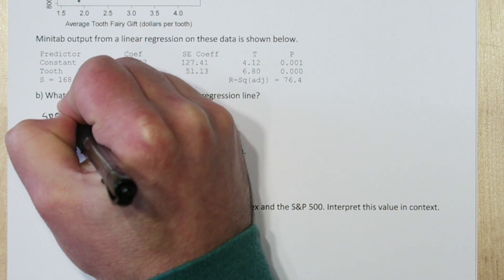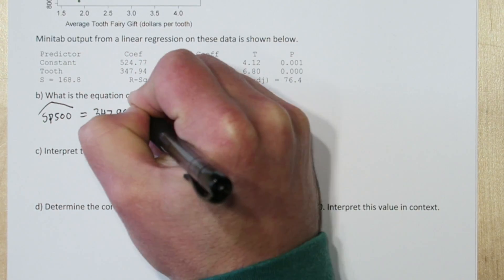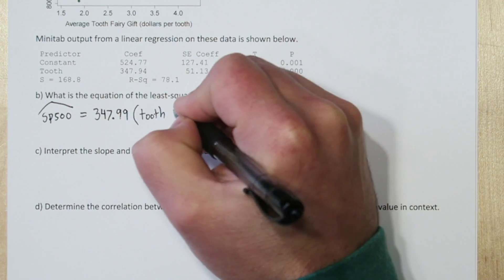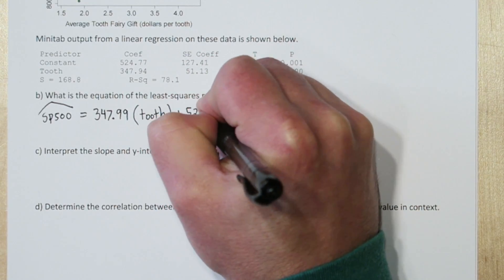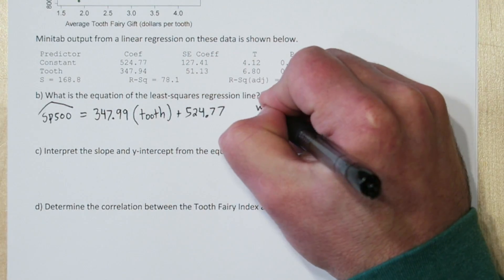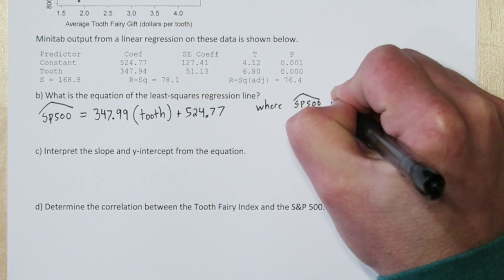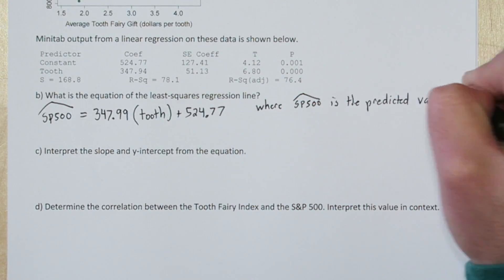So our equation is the predicted S&P 500 value equals 347.99 times tooth plus 524.77. And make sure you define any variables you use in your equation.